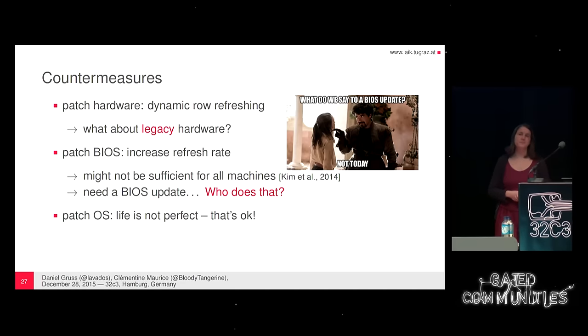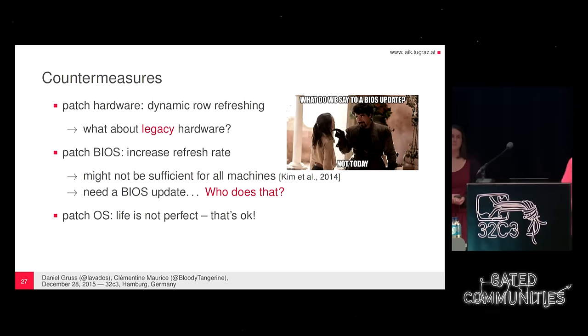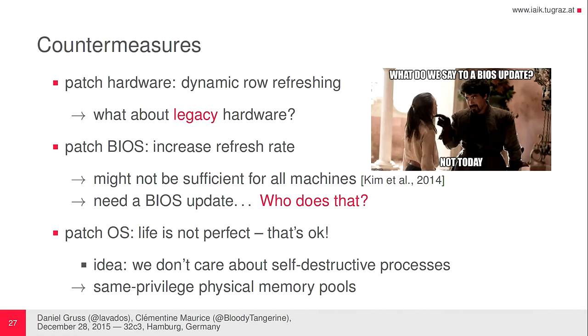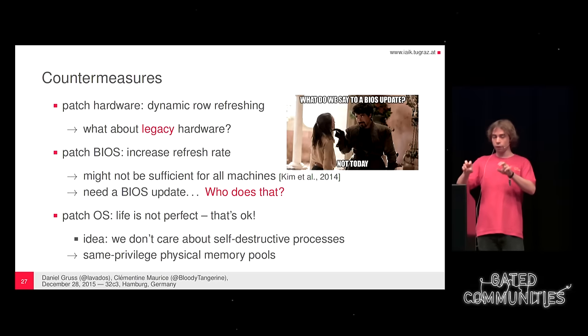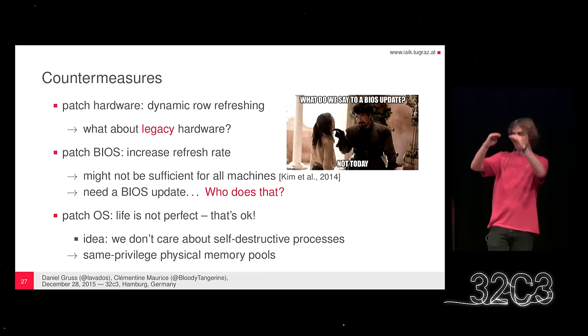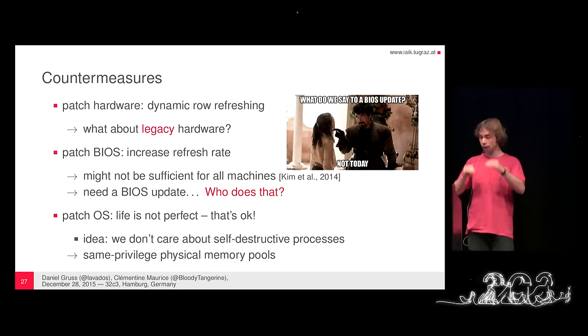We had another idea. While hammering without finding an exploitable bit flip, we thought: what if we just don't care about self-destructive processes that have bit flips in their own memory? We only have to prevent bit flips in memory of different privilege levels or other processes. If we can prevent that, we can prevent any Rowhammer exploit — row hammering is acceptable as long as it can't be exploited. The idea is to have physical memory pools: separate pages of different privileges with gaps in physical memory that prevent bit flips from crossing privilege boundaries. If you group by privilege and leave only a small gap between memory pools, it could work.